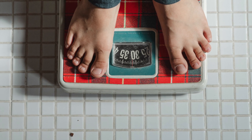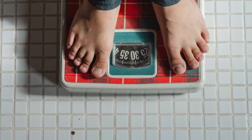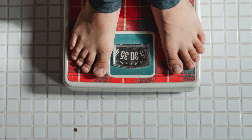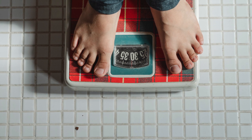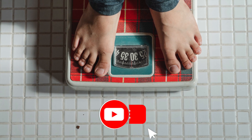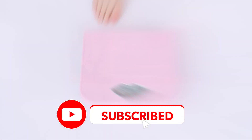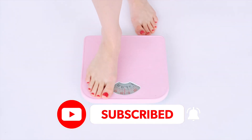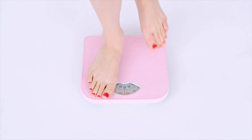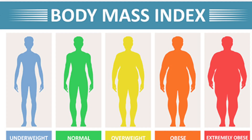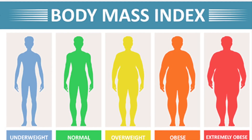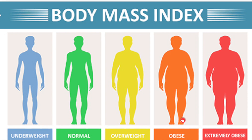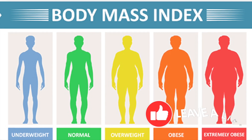BMI, or Body Mass Index, is a popular way to assess a person's weight and overall health. It is a convenient rule of thumb used to broadly categorize a person as underweight, normal weight, overweight, or obese based on their mass and height.